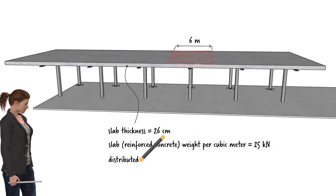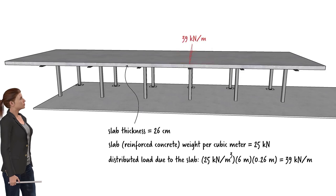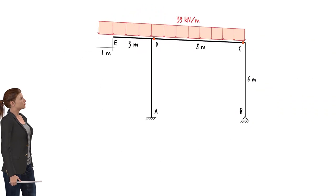And the unit weight of reinforced concrete is 25 kilonewtons per cubic meter. Therefore, if we multiply the slab weight by the width of the tributary area and by the slab thickness, we get the load that each frame must support. It is a uniformly distributed load of 39 kilonewtons per meter. So this is the frame that we need to analyze.